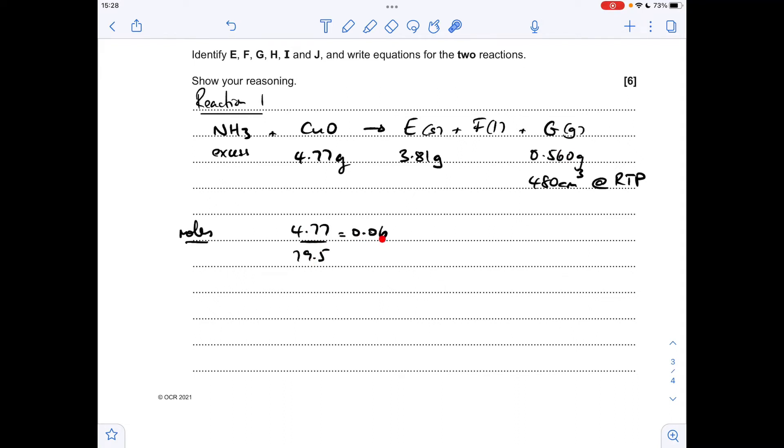Starting with moles of copper oxide, mass over MR is 0.06. 480 cm cubed at RTP is 0.02 moles, dividing by the molar gas volume of 24,000 cm cubed. The MR of G, mass over moles, is 28. So the obvious thing to go for is nitrogen for G. We've got one of the letters sorted.